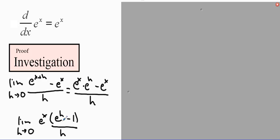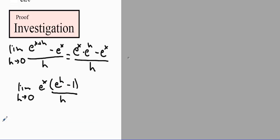As you can see, this limit of e to the h minus 1 over h is going to be approaching a value. If you take this limit and put it in your calculator, this limit of e to the h minus 1 over h as h approaches 0 — I should note, not 0, I mean 1 — that limit approaches 1.